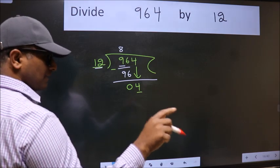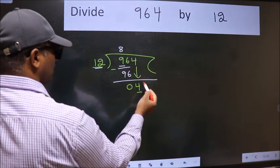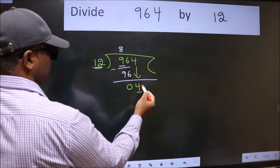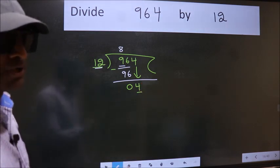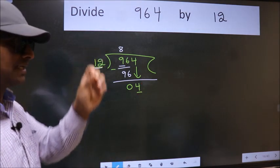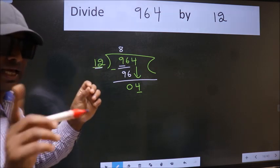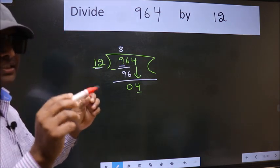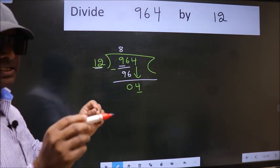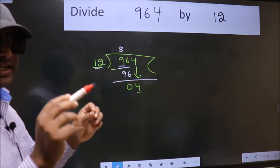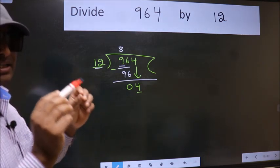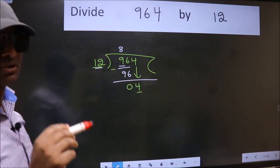And in the same step, you want to put dot, take 0, which is wrong. I repeat. Bring down the number and also put dot, take 0. Both at the same step, you should not do.